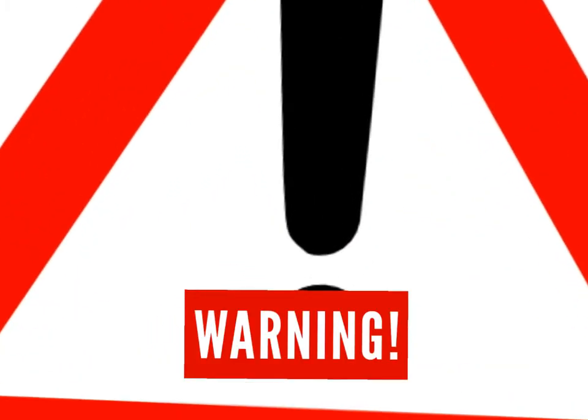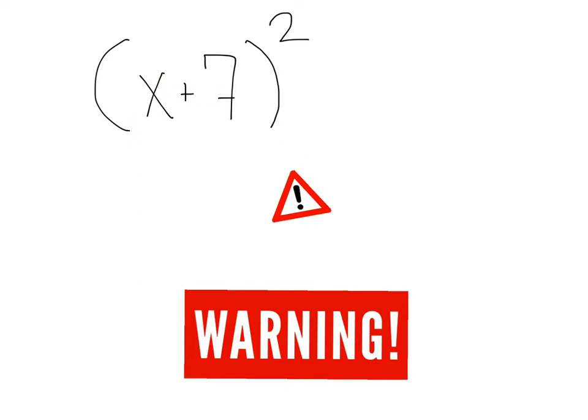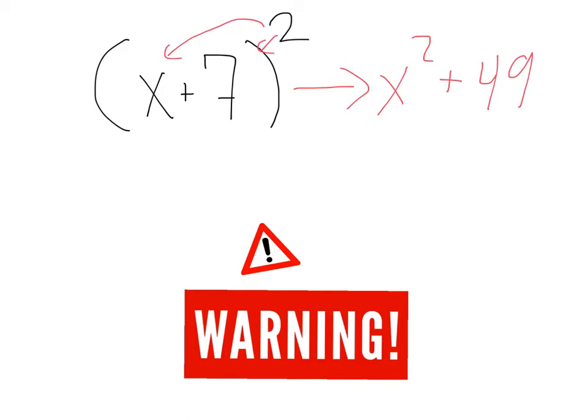Warning, warning, warning. People always get this type of problem wrong, and let me show you what they do. They take x plus 7 squared, and they say, well, I'm just going to turn this into x squared plus 7 squared, which is 49. They basically try to distribute this squared.